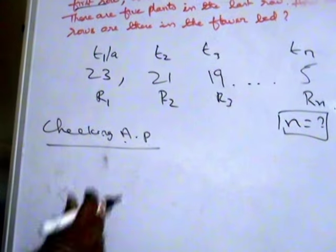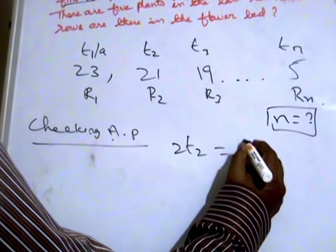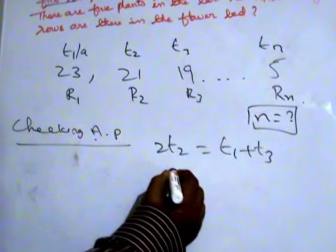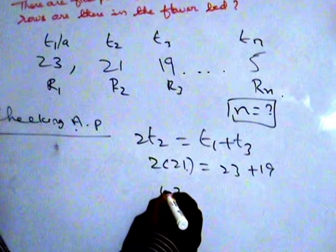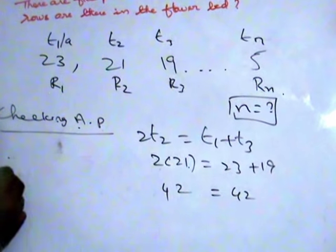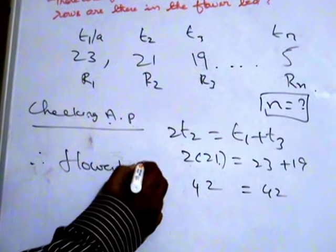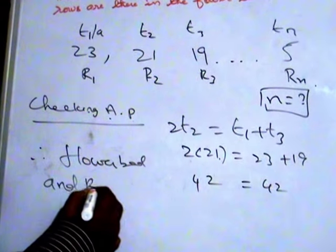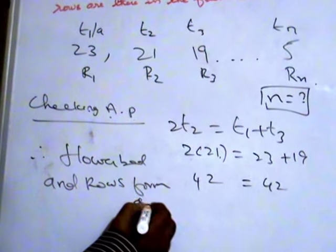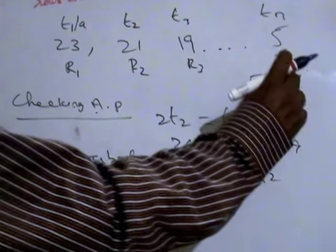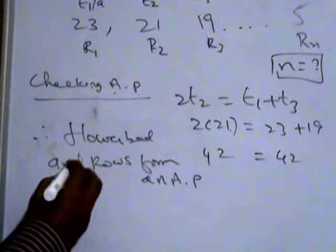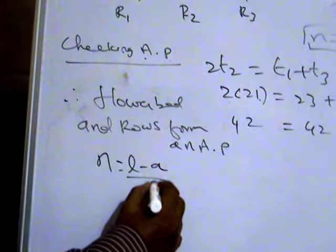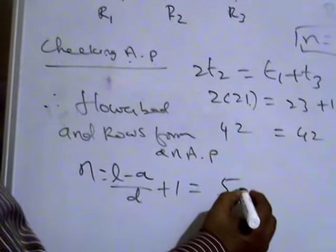Checking AP: the condition is 2×T2 = T1 + T3. So 2×21 = 23 + 19, which gives 42 = 42. Therefore, the flower bed rows form an AP. Now we find N — how many rows are there — using the formula N = (L − A)/D + 1. L is 5, A is 23.